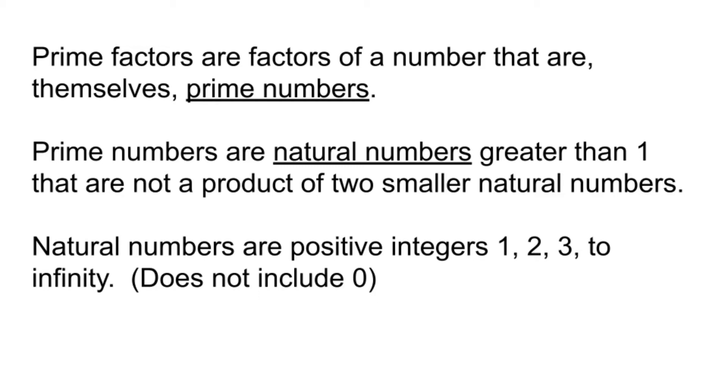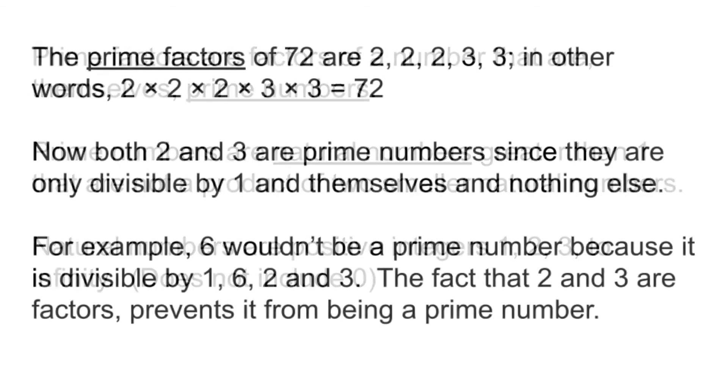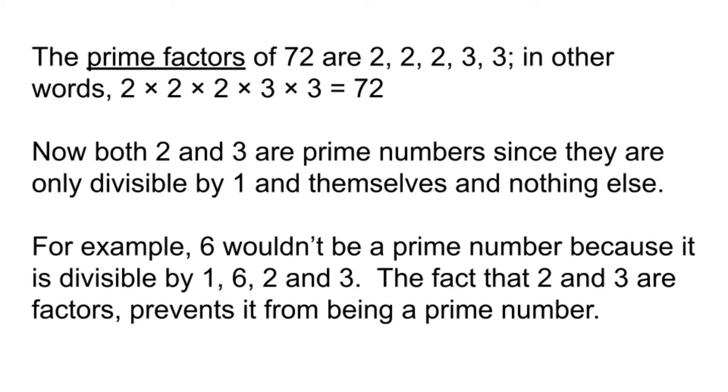Now that we got the definitions out of the way, which may or may not have clarified things for you, let's move on to an example to better understand this. The prime factors of 72 are 2, 2, 2, 3, 3. In other words, 2 times 2 times 2 times 3 times 3 equals 72. Now both 2 and 3 are prime numbers, since they are only divisible by 1 and themselves, and nothing else.